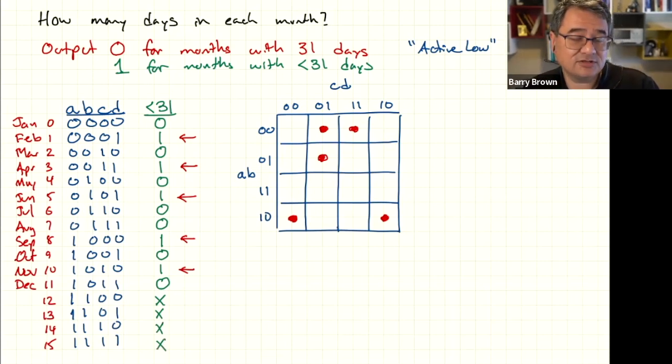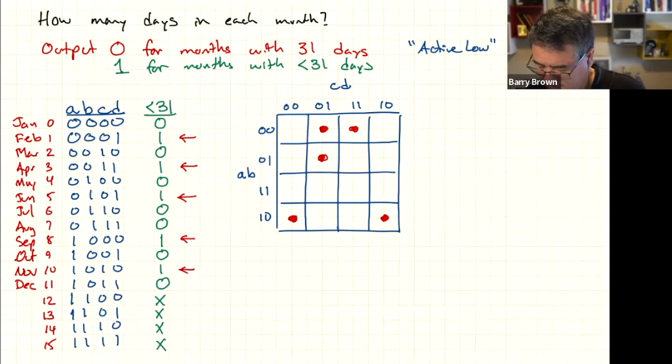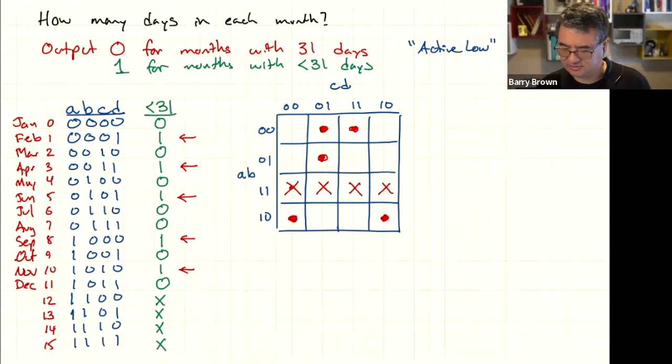So let's transfer those x's into our Karnaugh map and see what we get. So we've got an x on the 1100 box, which is right here. And I'm going to put in an x, not a dot. And then the next one is at the 1101, which is right here. And then the 1110, which is over here. And then the 1111, which is there. So it's a whole row of x's in our Karnaugh map.